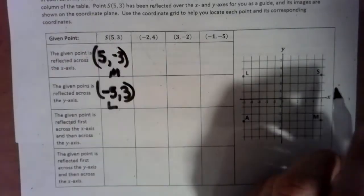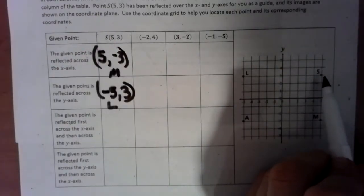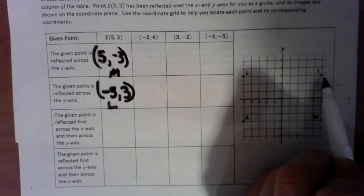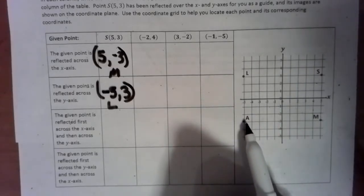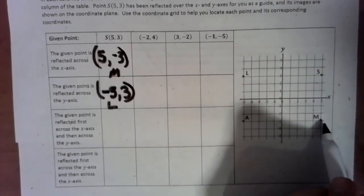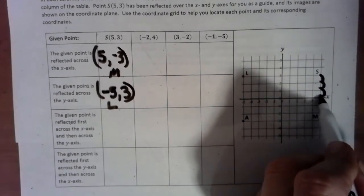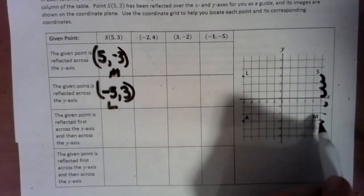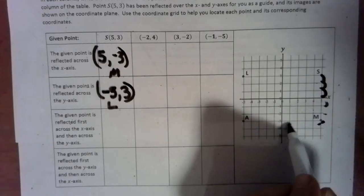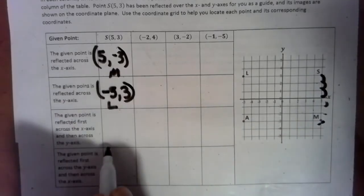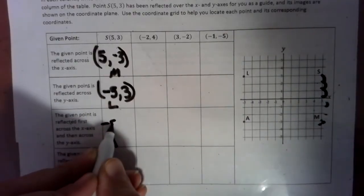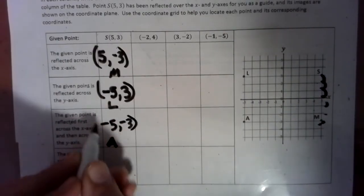Okay, so now we're still taking that same point. We're going to reflect it first across the x-axis. So we're going to go across the x-axis and then across the y-axis. So we bring it down here. So we go 1, 2, 3 down. So 1, 2, 3, 4, 5 over. So 1, 2, 3, 4, 5 over to land on the A point, which is negative 5, negative 3.